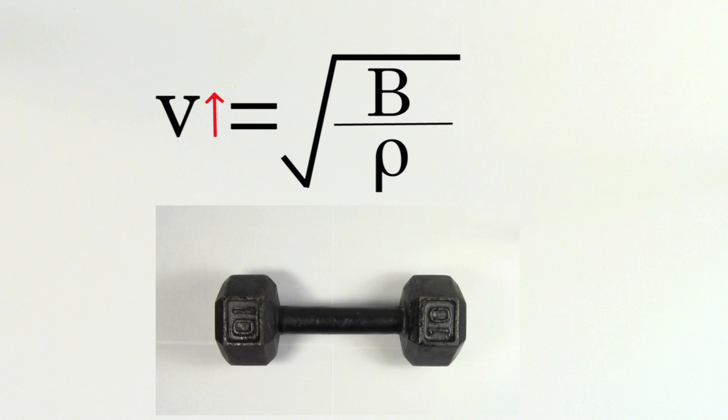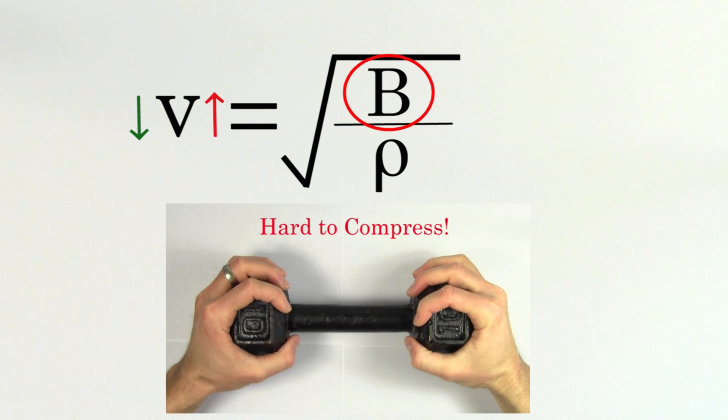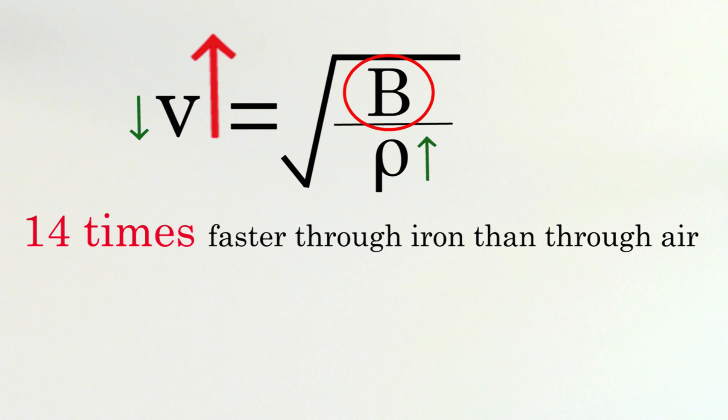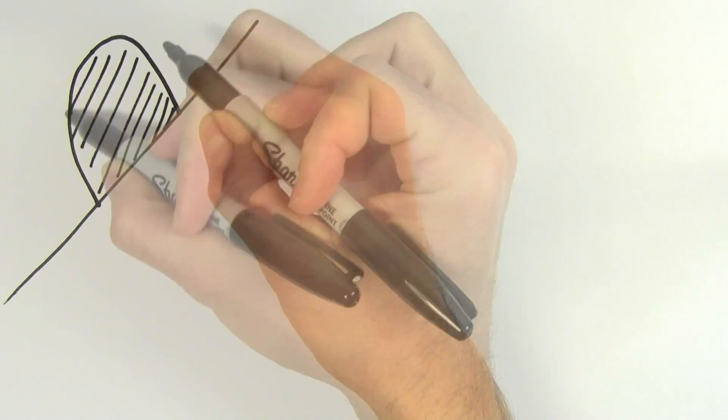Does sound travel faster through iron or slower? Well, it turns out that the higher stiffness of iron more than compensates for the increased density, and the speed of sound through iron is about 14 times faster than through air.